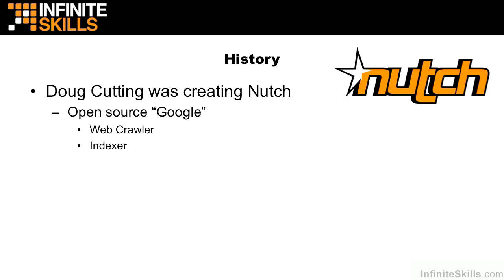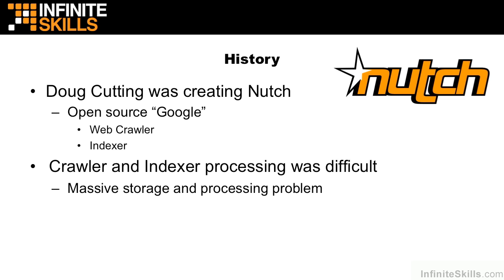For example, on the AKC's website, the American Kennel Club, if the web crawler hit it and pulled down a bunch of information, it might rank Basset Hounds as very highly relevant when a user searches for Basset Hounds. The crawler and the indexer processing was difficult — it was essentially a massive storage and processing problem. Doug needed some way to store all of the massive data that was coming down and an easy way to process all that data and do it in a parallelizable fashion.